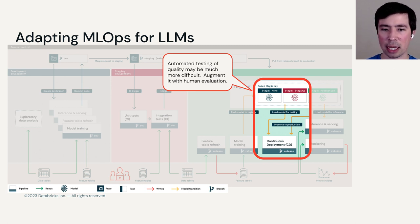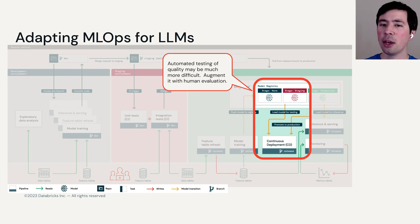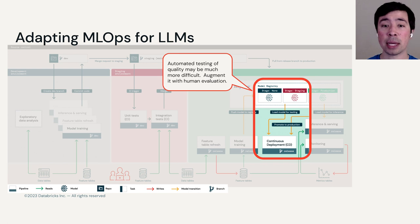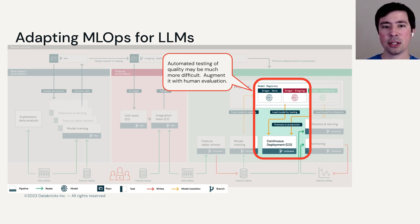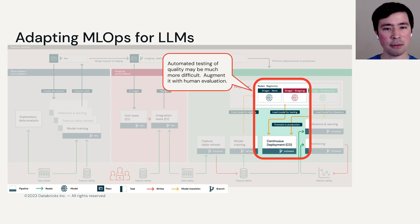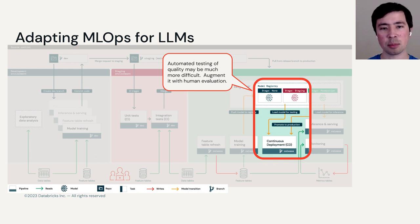The place where human evaluation will probably happen is in the continuous deployment part. Rather than doing what you might do with traditional ML — like testing on a batch dataset offline — you'll more likely do incremental rollouts, showing the model or LLM pipeline to a small set of users, seeing how they respond, and increasing that percentage as you gain confidence.